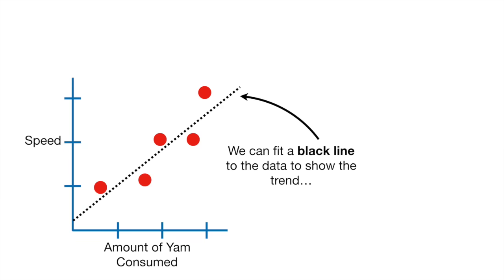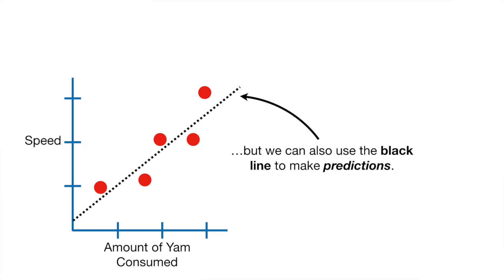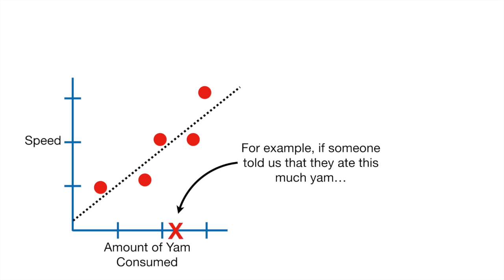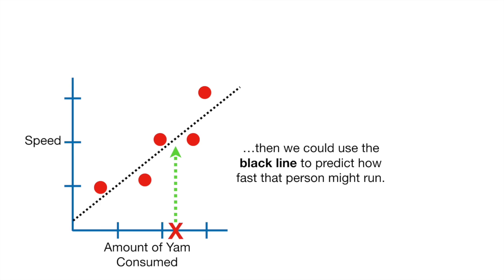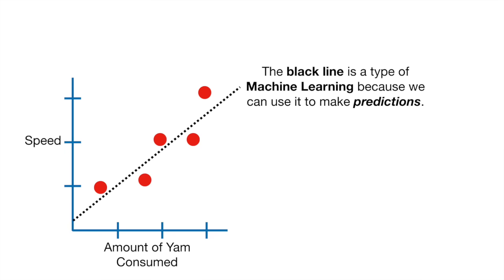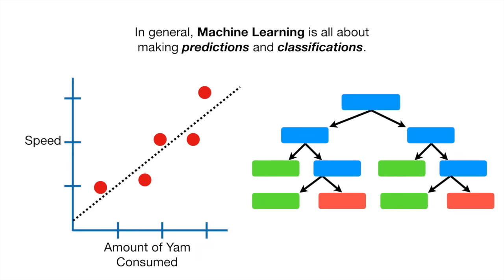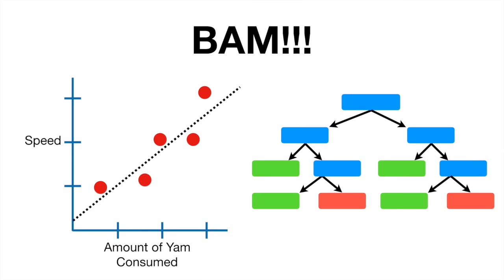We can fit a black line to the data to show the trend. But we can also use the black line to make predictions. For example, if someone told us they ate this much yam, then we could use the black line to predict how fast that person might run — this is the predicted speed. The black line is a type of machine learning because we can use it to make predictions. In general, machine learning is all about making predictions and classifications. Bam!